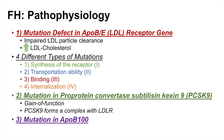Another mutation that can lead to familial hypercholesterolemia is a mutation in APOB100. APOB100 is a ligand for the LDL receptor — it is located on LDL and is the ligand that binds to the LDL receptor. A mutation in APOB100 is an autosomal dominant mutation that leads to impaired binding of APOB100 to the LDL receptor, decreasing the clearance of LDL and leading to increased levels of LDL cholesterol.